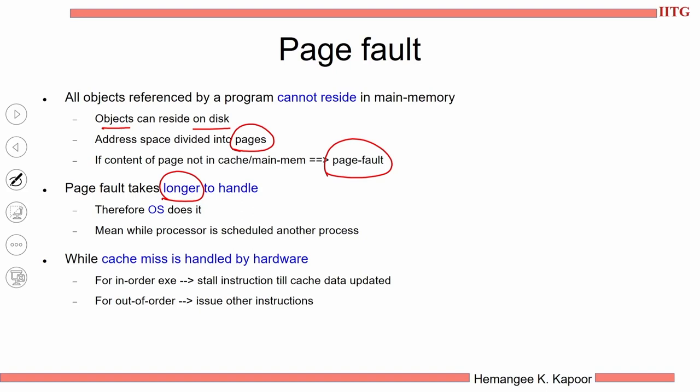Page fault is going to take several clock cycles. While the page fault is being handled — you go to the disk, bring the page, load it in the RAM — the processor can be scheduled to do some other process. Another process gets scheduled when the operating system handles the page fault.